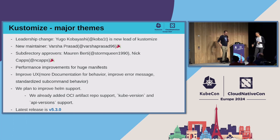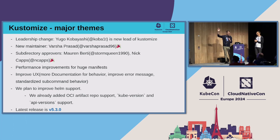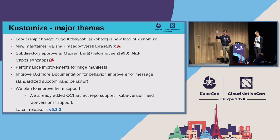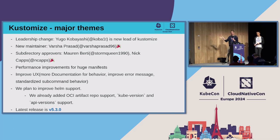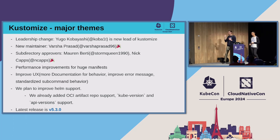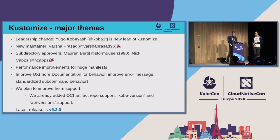Kustomize shipped a bunch of awesome new stuff. We have a new lead for the Kustomize subproject — shout out to Hugo (Cobalt on GitHub). They stepped up as the new lead. Some new maintainers and subproject approvers: shout out to Varsha, Maureen, and Nick. There are big performance increases coming for really large manifests, improving UX and documentation. There's planned Helm support, so they plan to ship full Helm support. If you're not on the latest version of Kustomize, do upgrade.